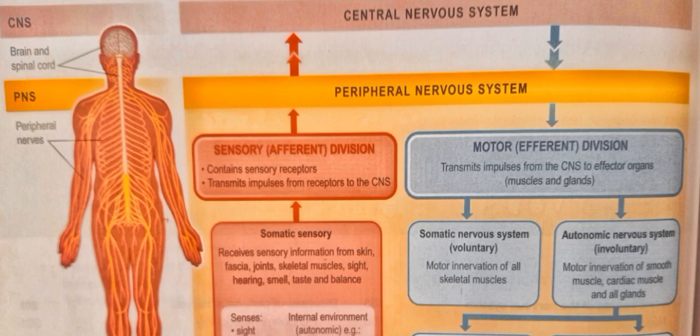The efferent division transmits impulses from the CNS to the effector organs. Remember: the effector organs include muscles and glands. So motor nerves carry signals out to these effector organs.